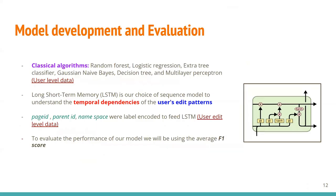From all the features discussed, we considered several classical algorithms and developed models like Random Forest, logistic regression, and others. We averaged all the features and used those as input for the classical algorithms at the user level. We also wanted to understand temporal dependencies and user edit patterns, so we developed an LSTM-based model using all edits along with information like page ID, parent ID, and namespace as user-edit-level data, encoding and labeling them before training. We finally used F1 score to evaluate model performance.